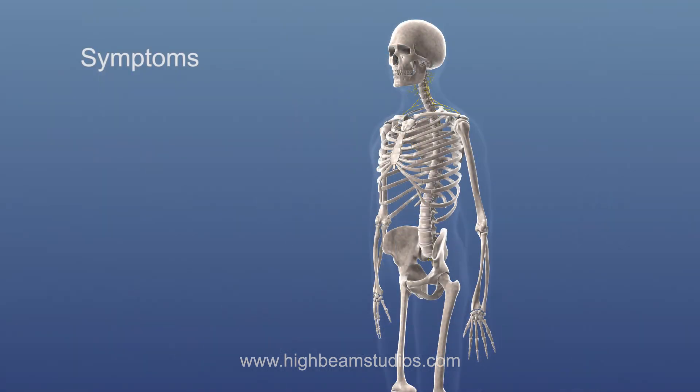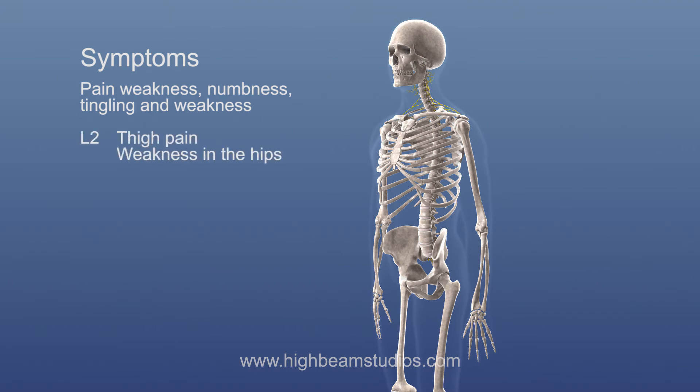Symptoms will vary depending on the injury, but may include pain, numbness, tingling, or weakness. An injury that occurs at the L2 level could cause thigh pain or weakness in the hips. An injury that occurs at the L3 level could cause knee and thigh weakness or pain.